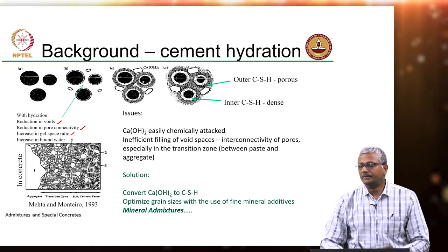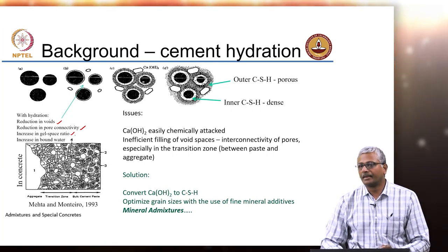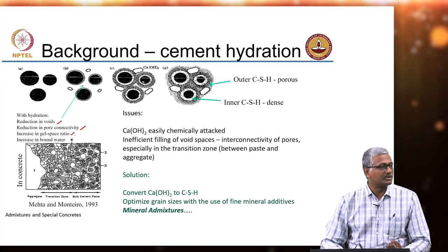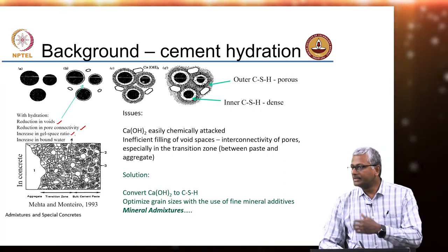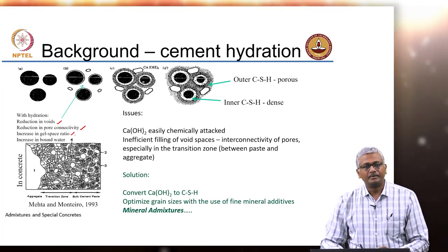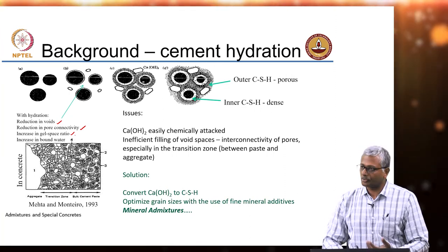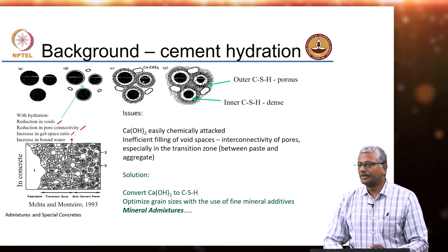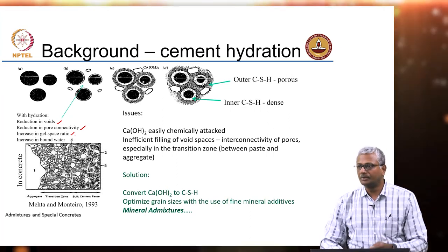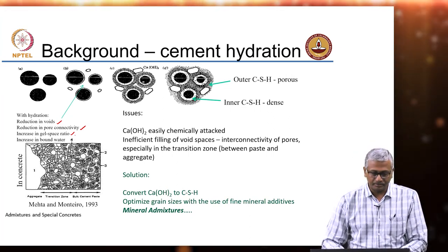There is also an increase in bound water content — water that is chemically bound in the structure of the hydration products. In CSH, the H is the water bound in the calcium silicate structure. Calcium hydroxide, if you heat it to 500°C, you will remove the water that is bound within the structure of calcium hydroxide.